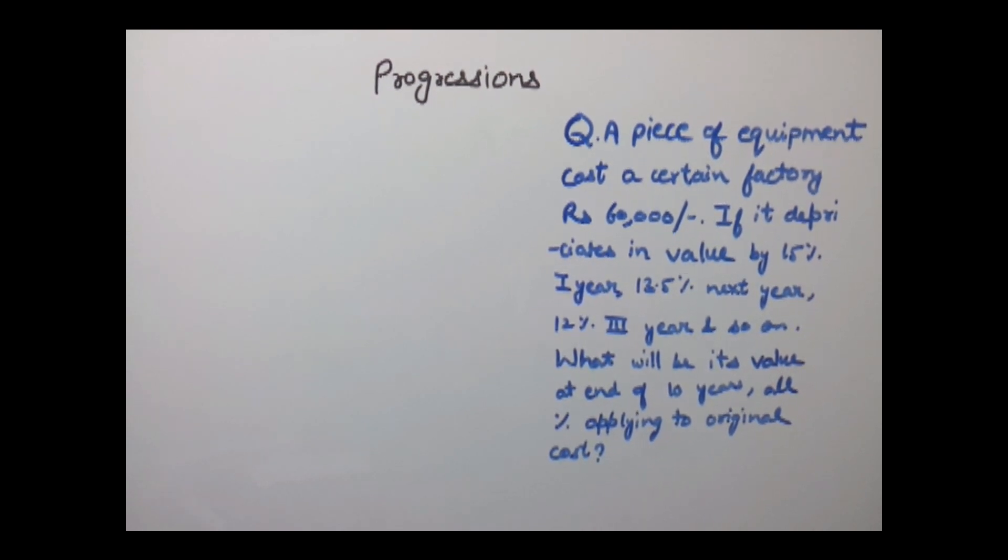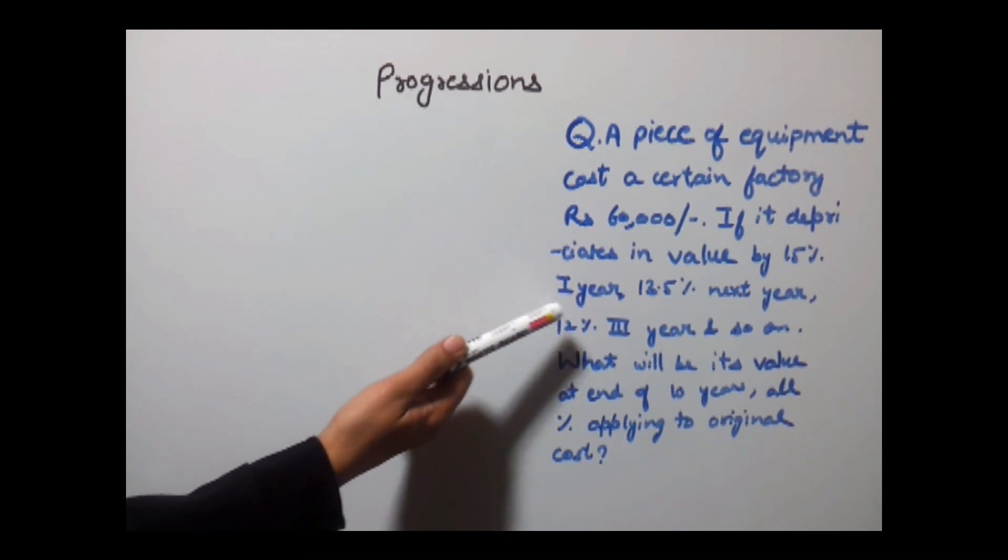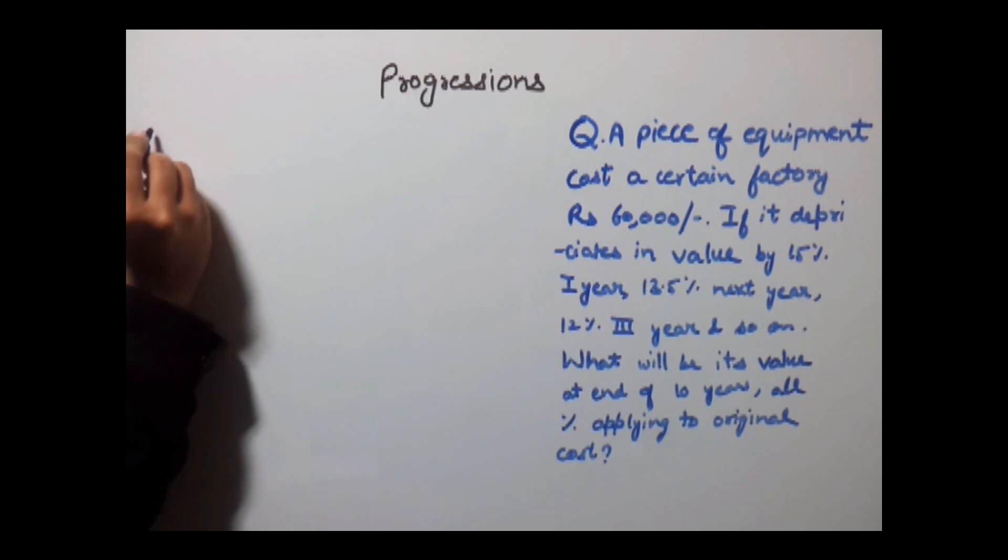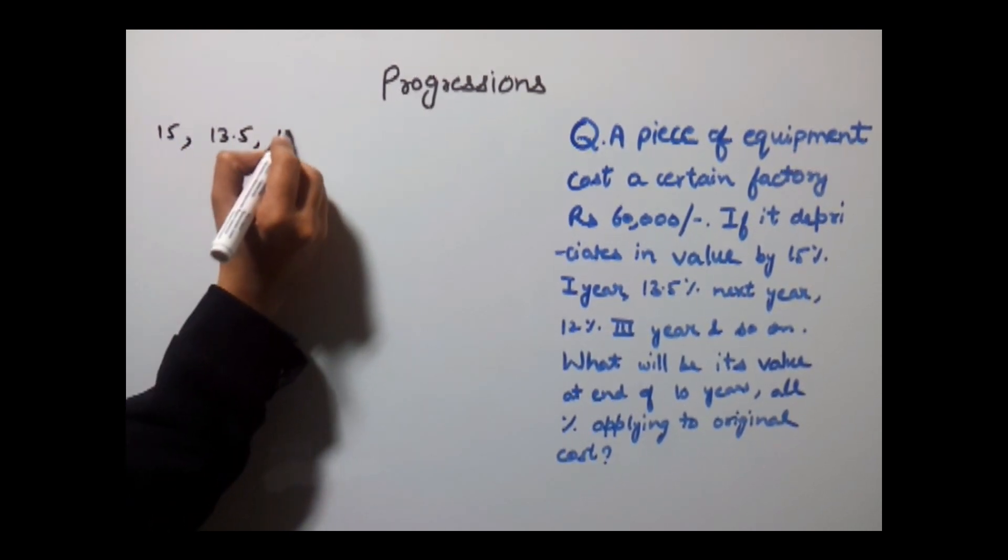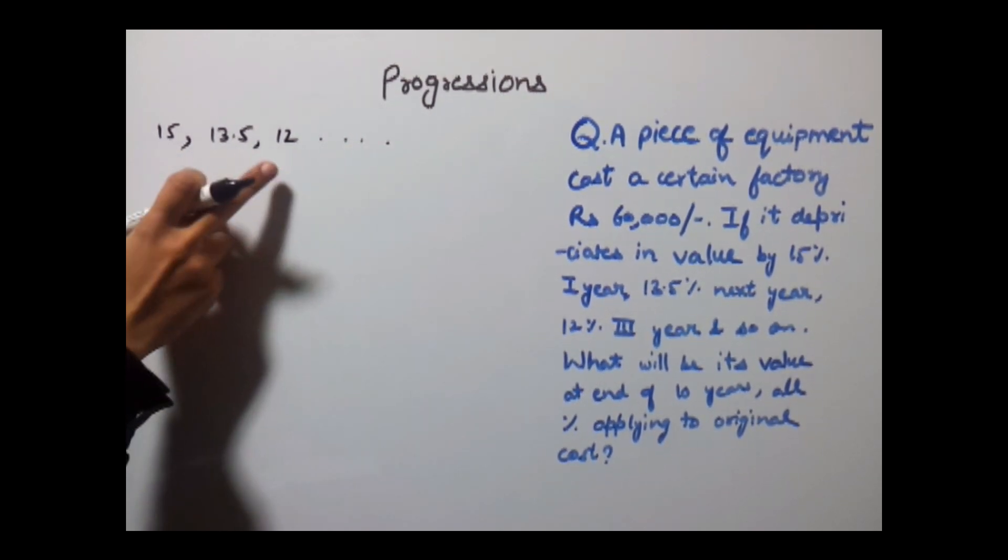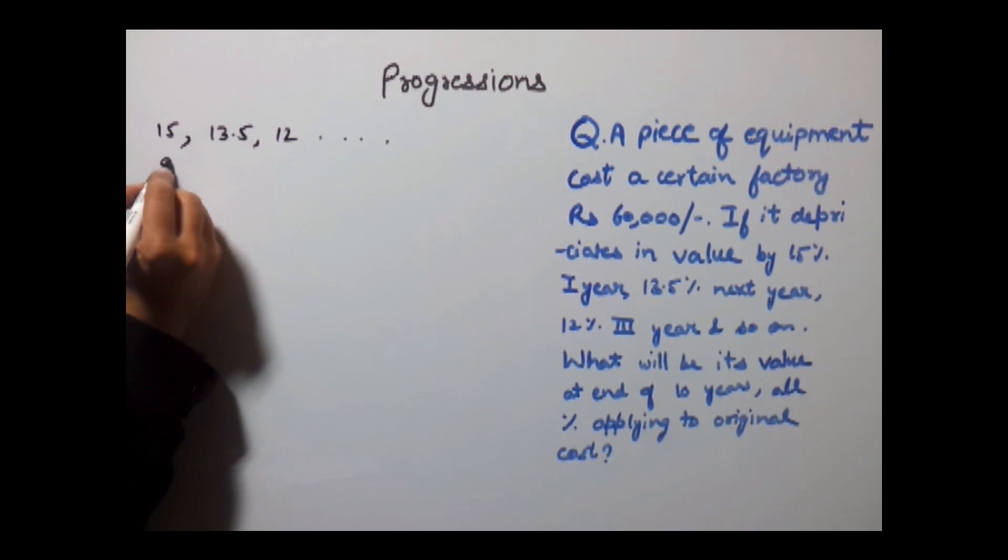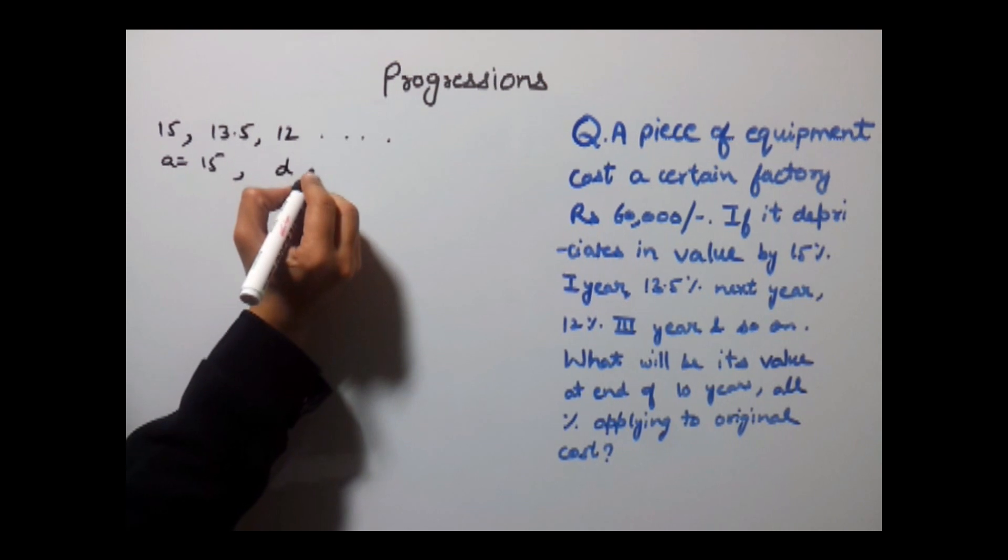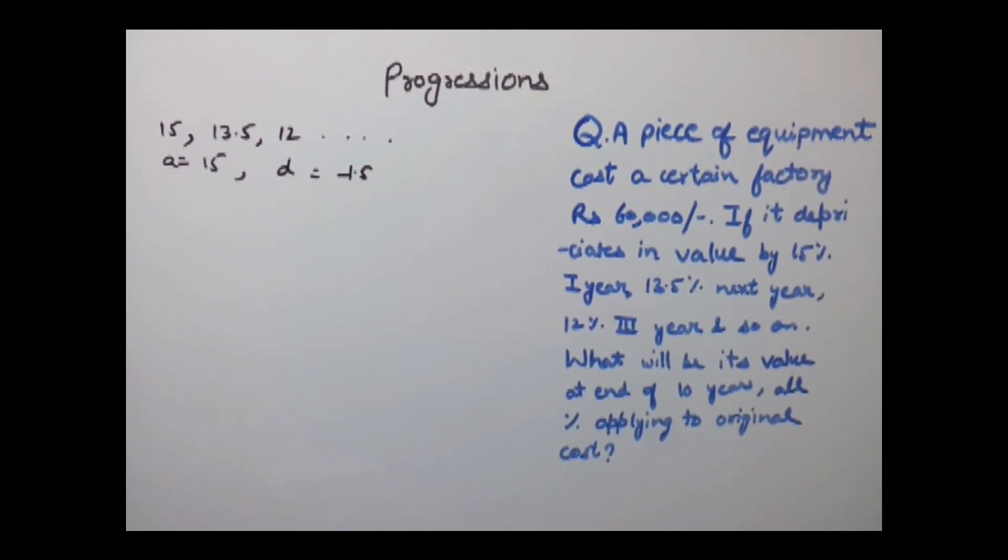Now here it is given that a machine depreciates in value by 15% first year, 13.5% second year and 12% third year - that is 15, 13.5, 12 and so on. We can see that this forms an AP where value of A is 15 and value of D, which is the common difference, is minus 1.5.